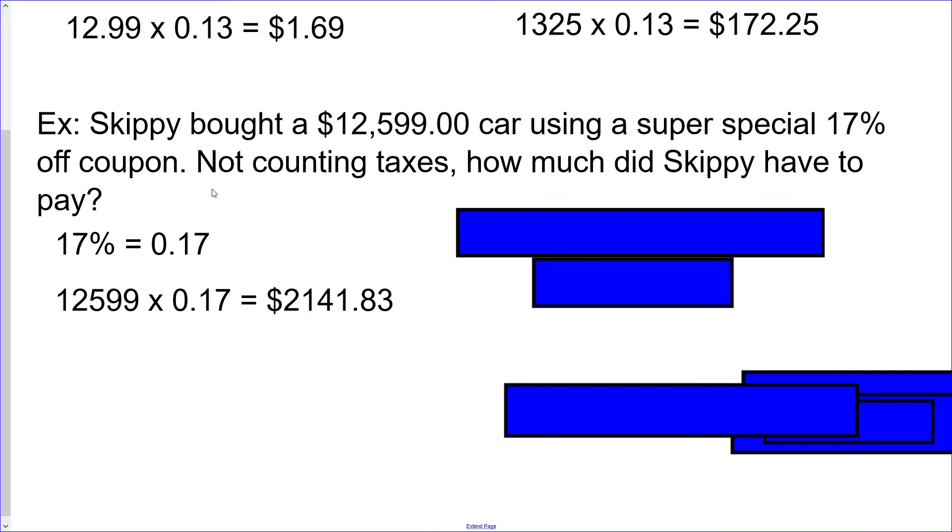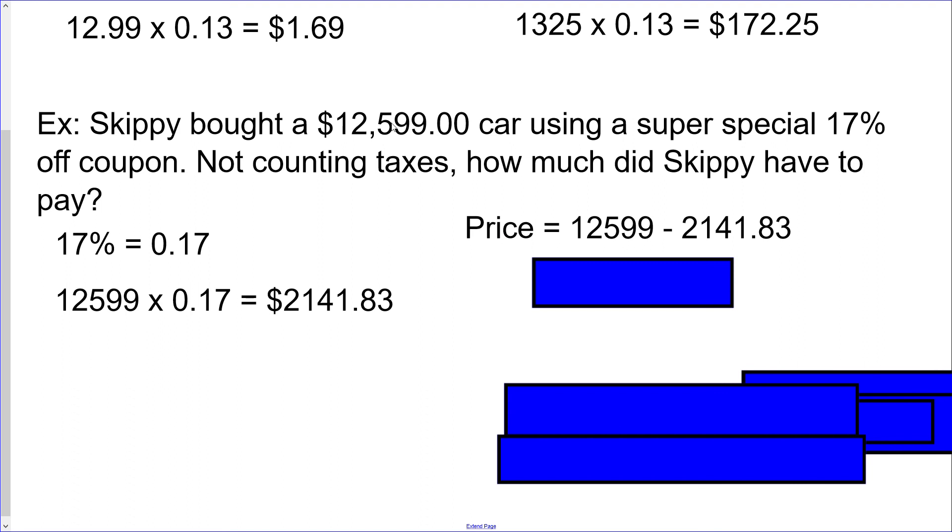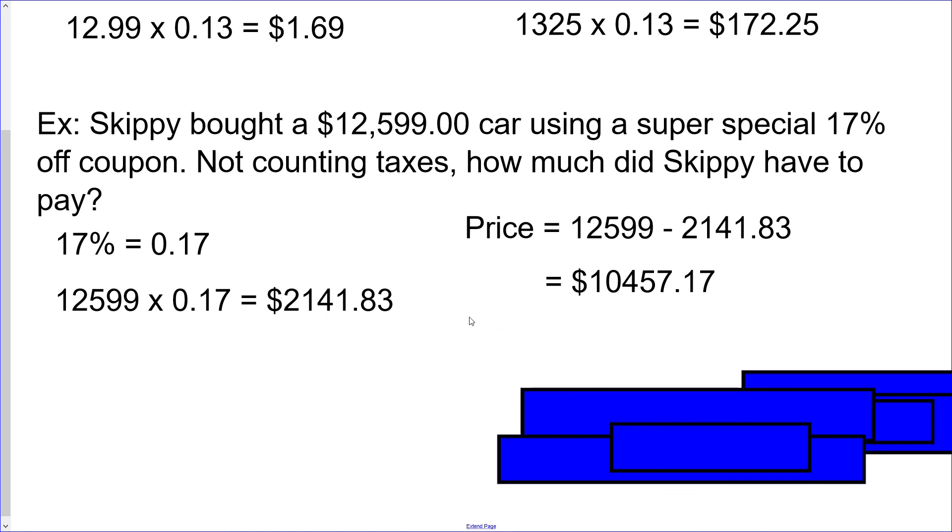Now, because of the question here, it says, not counting taxes, how much did Skippy have to pay? Keep in mind, he's using a coupon, which means he's saving. He saved $2,141.83. Not that that's what the car cost him. So it's like a 10% off sale or something like that. You can calculate your savings, but you have to make sure to note that that's not what you're paying. That's what you didn't pay. That's what you're saving from that cost. So you just have to do a little bit of subtraction to find your final answer. So the final price equals $12,599 subtract $2,141.83. And you should have ended up with $10,457.17. And again, throw the dollar sign back in there.